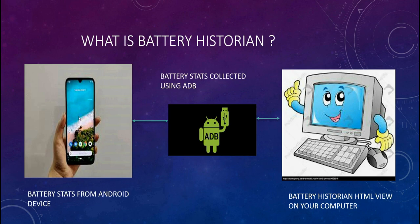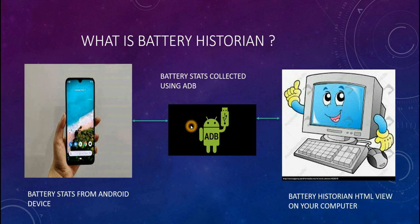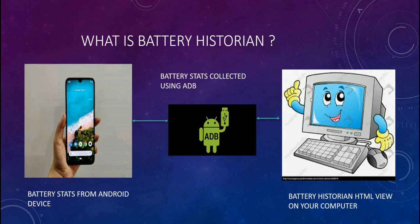In our device, we can collect battery stats — battery stats is nothing but battery dumps. A bug report contains dumps of all processes, so battery dumps and battery stats are also part of the bug report. We collect the bug report from the Android device through ADB. There are different ways to collect a bug report, which I have shown in my previous videos. We collect the bug report via ADB shell and input it to the web browser so that the Battery Historian HTML view is generated on your computer.